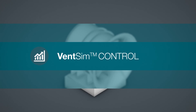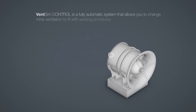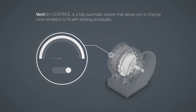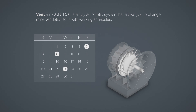VentSim Control is a fully automatic system that allows you to change mine ventilation to fit with working schedules and real-time operations. Fan speed is automatically reduced or increased, or switched on and off, according to shift changes or planned events such as blasting and the position of vehicles and personnel. Schedules and events can be easily added or overridden to accommodate one-off or unplanned incidents.